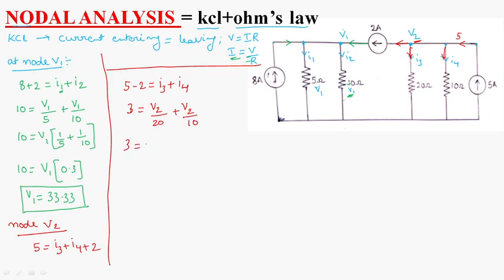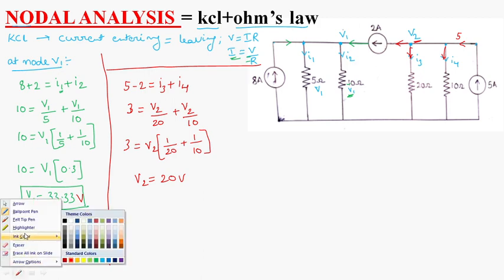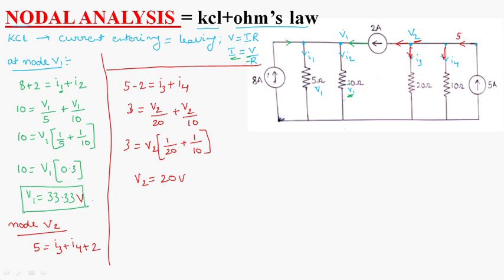3 is equal to V2 into 1 by 20 plus 1 by 10, which is equal to, by simplifying this one, we will get V2 is equal to 20 volts. So, now, what we will do is we will find I1, I2 and all those things. This is V2.